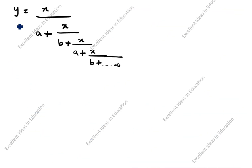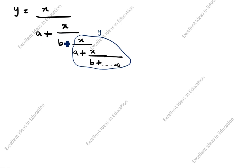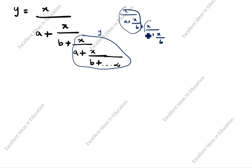The next question: y is equal to x divided by a plus x divided by b plus x divided by a plus x divided by b plus x... goes on to infinity. You see here this term — x divided by a plus x by b — the same term repeats, so we will take it as y.